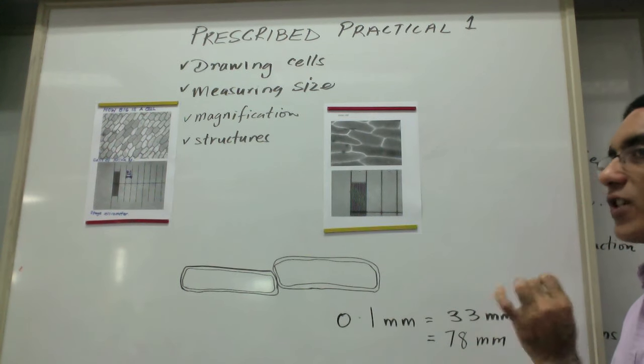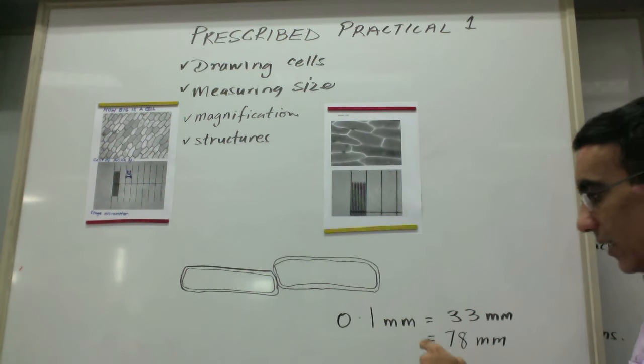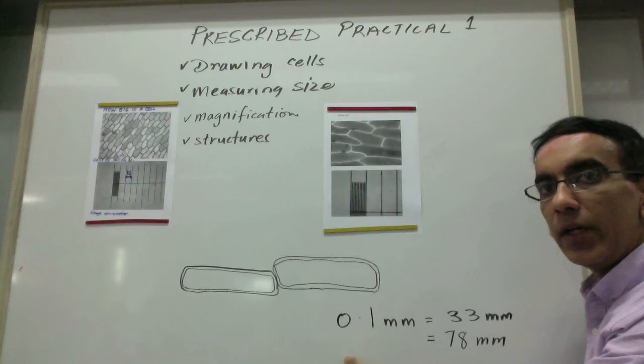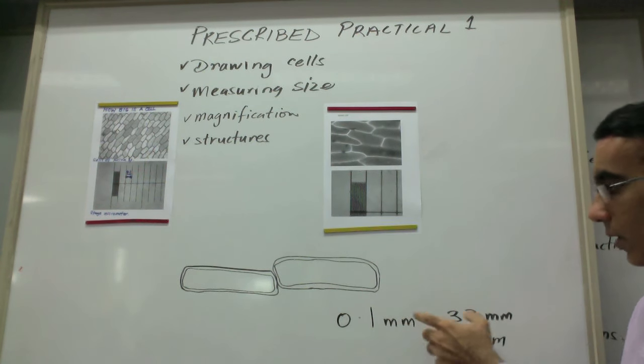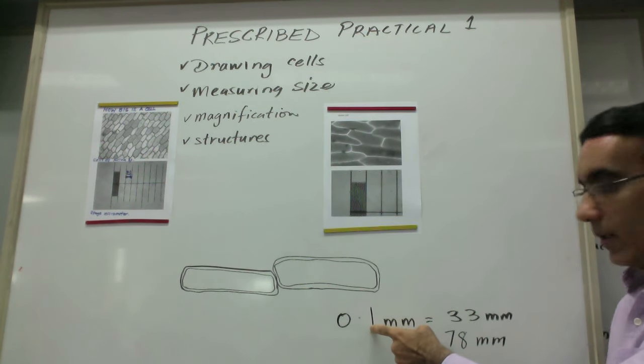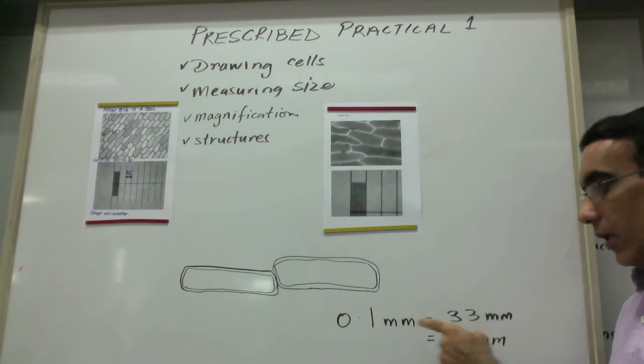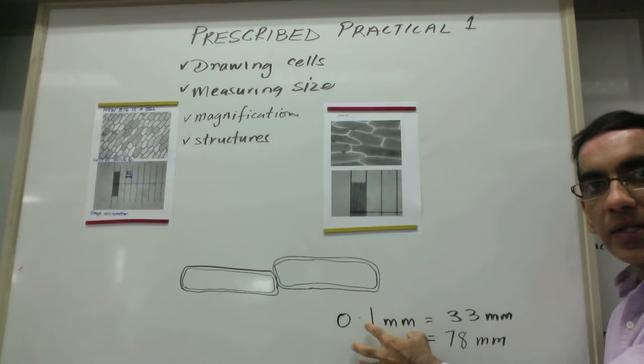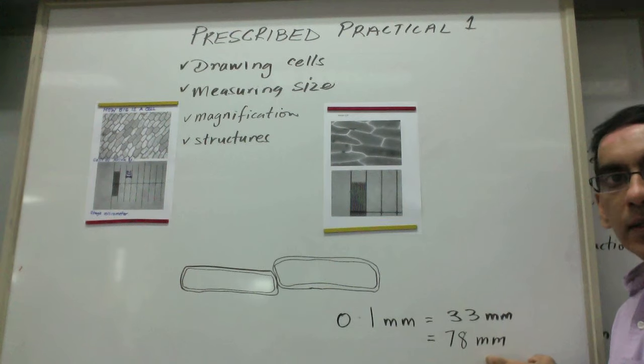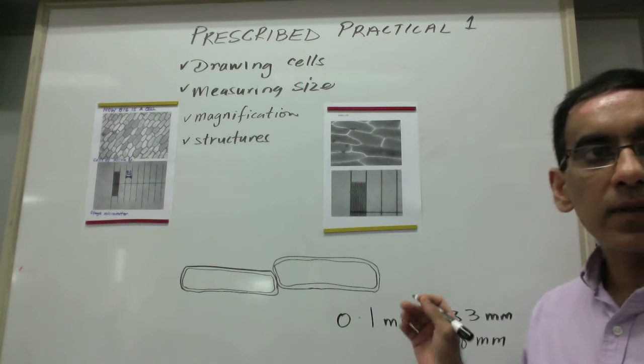What is the actual size of that cell? It's kind of like the missing number right here in this set of ratios. You have a ratio of 0.1 to 33, it's equivalent to cell size to 78.